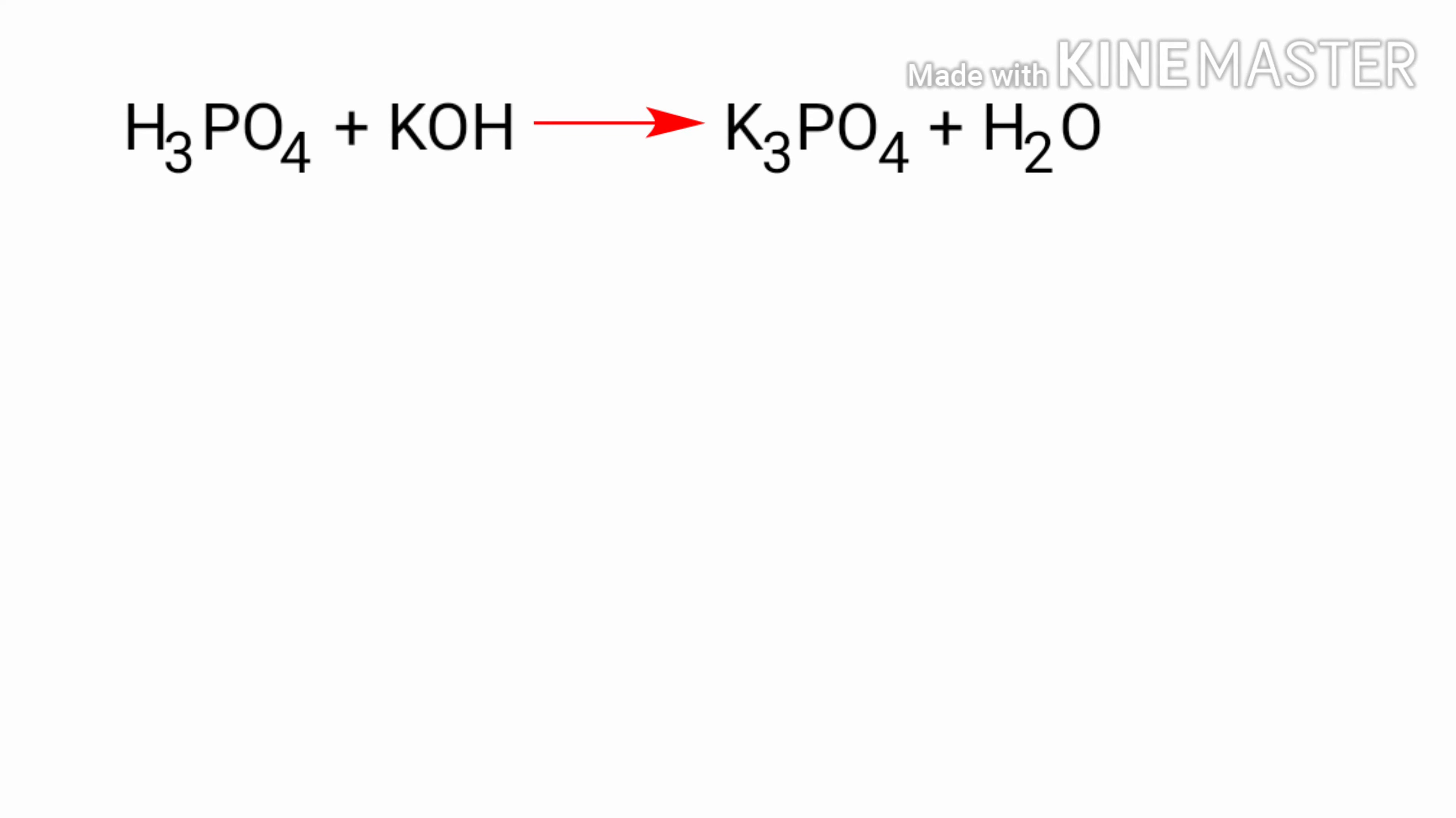First thing we do is give each compound a coefficient: aH3PO4 plus bKOH gives us cK3PO4 plus dH2O. Next, applying the conservation of mass, the total number of atoms of each element must be the same on both sides.